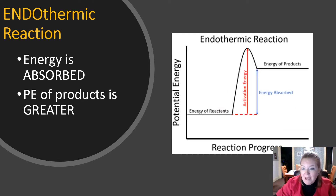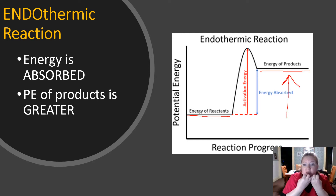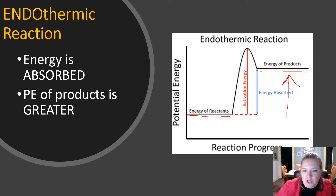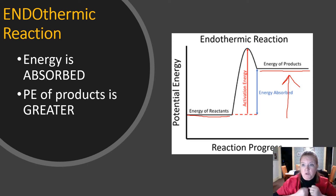When we have an endothermic reaction, you can see the potential energy of the reactants and the potential energy of the products. That amount has increased because energy is being absorbed. So the energy of the reactants will always be lower and the energy of the products will always be higher because energy is being absorbed.